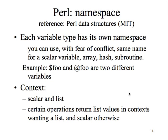Namespaces: each variable type has its own namespace. You can use the same name for a scalar variable, array, and hash without conflict - though it's not good programming practice. For example, you can have a 'foo' variable and a 'foo' array as two different variables. They all have different namespace scope. Certain operations return list values and contexts, wanting a list or a scalar otherwise, depending on the variable type.